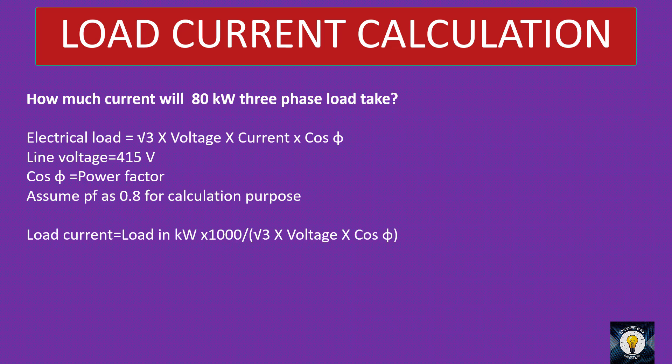There are two practices prevailing in the industry. Some people take the power factor as 0.8, others take it as 0.9. At 0.8 power factor, load current equals load in kW into 1000 divided by root 3 into voltage into cos φ. Substituting the constants — root 3 is 1.73, voltage is 415 V, cos φ is 0.8 — the equation simplifies to load into 1.74. So remember only this value, 1.74, for three-phase at 0.8 power factor.